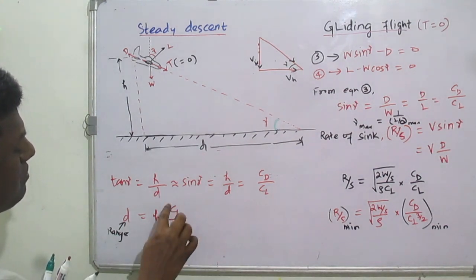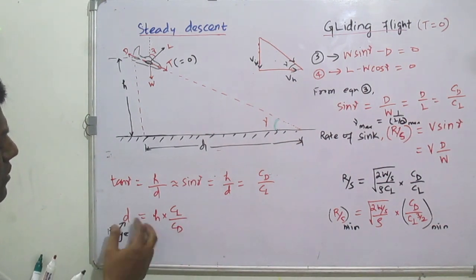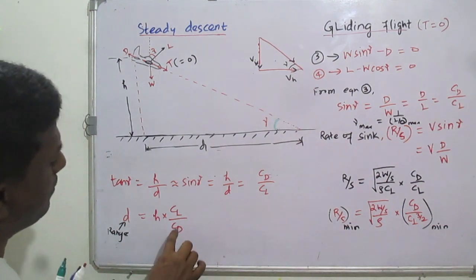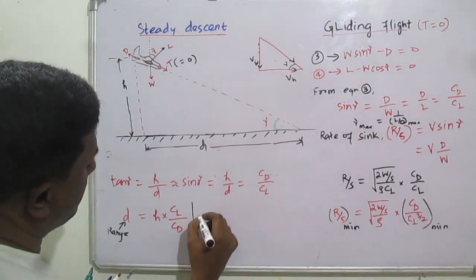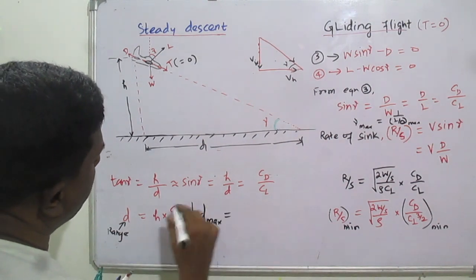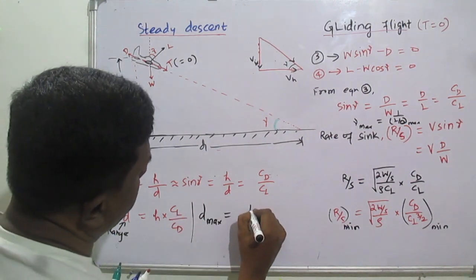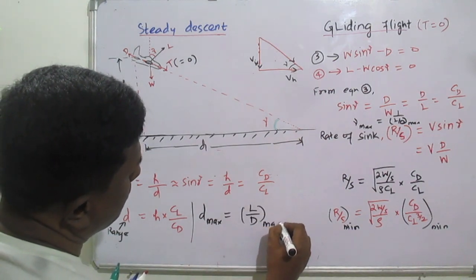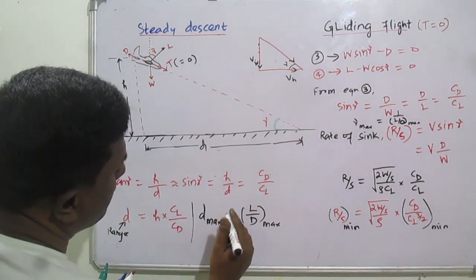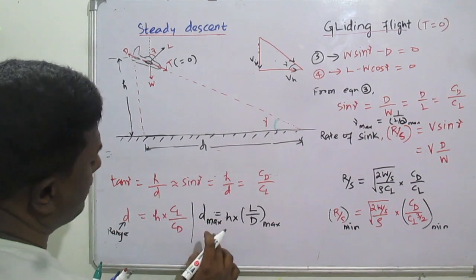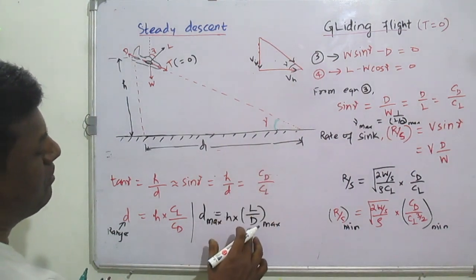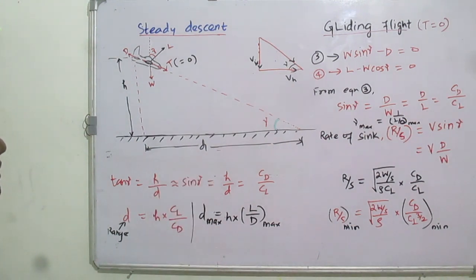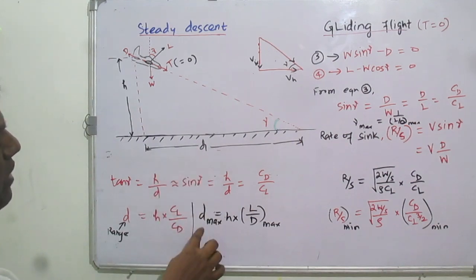For maximum range, the condition C_L / C_D must be maximized, meaning we apply minimum drag conditions. Therefore, maximum range d_max = h × (L/D)_max. If we know the initial altitude h from which gliding starts and the (L/D)_max value, we can calculate the maximum range.